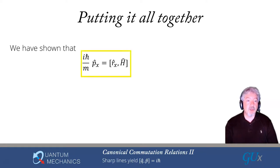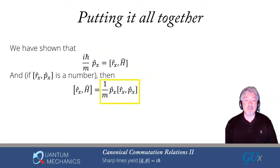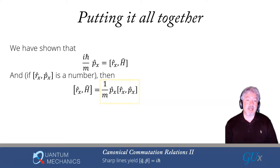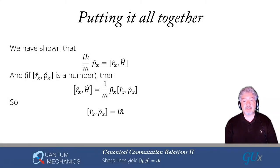Putting it all together: the equation of motion says i h-bar over m times Px equals the commutator of Rx with the Hamiltonian. If the commutator [Rx, Px] commutes with Px, the two terms combine and we find the commutator of Rx with the Hamiltonian equals 1 over m times Px times [Rx, Px]. Equating both expressions, we learn that the commutator of Rx with Px is equal to i h-bar. If the commutator is a number, it must be i h-bar — there's no other number it could be. It's a little surprising that it's a complex number, but that is what comes out.